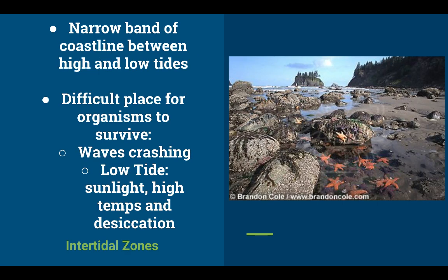In intertidal zones, a very narrow band of habitat is dependent on high and low tide — a very difficult place for organisms to survive. There are periods of up to 8 to 12 hours of low tide where organisms like sea stars are exposed to sunlight, high temperatures, and desiccation — drying out. Sea stars, sponges, mussels, crabs, and barnacles have all done an amazing job adapting to this difficult environment.